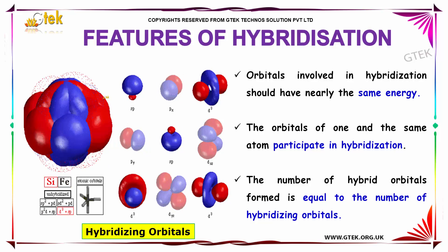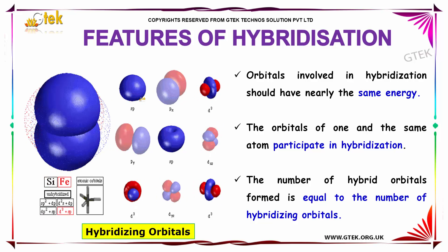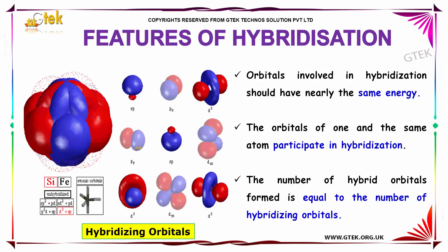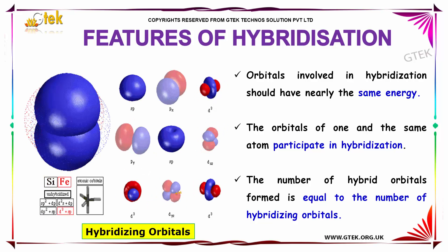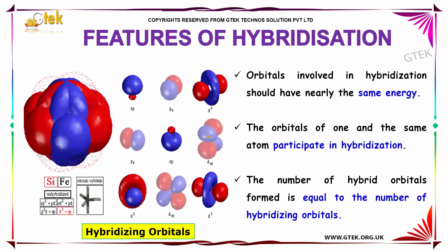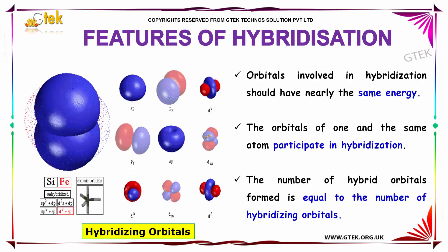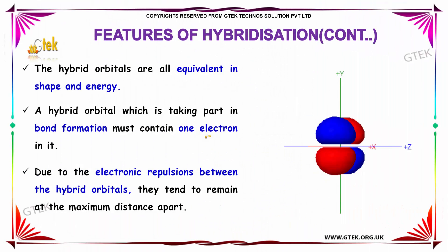The orbitals of one and the same atom participate in hybridization. The number of hybrid orbitals formed is equal to the number of hybridizing orbitals. The hybrid orbitals are equivalent in shape and energy.